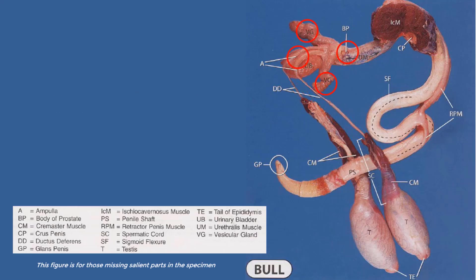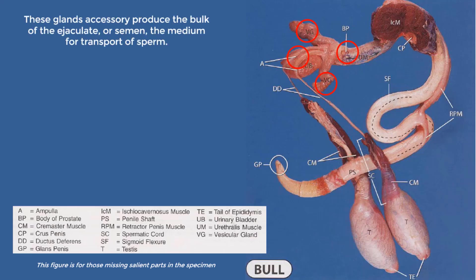Next are the accessory glands present in the bull's reproductive system. These include the ampulla of the ductus deferens, the vesicular glands, the prostate gland, and the bulbourethral gland. These accessory glands produce the bulk of the ejaculate or semen, which is the medium for transport of sperm. The ampulla associated with the terminal parts of the ductus deferens contribute to the volume of semen.